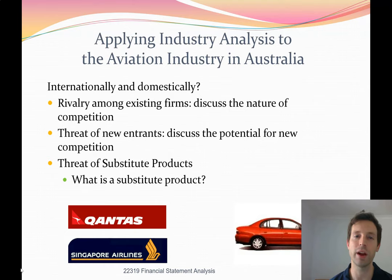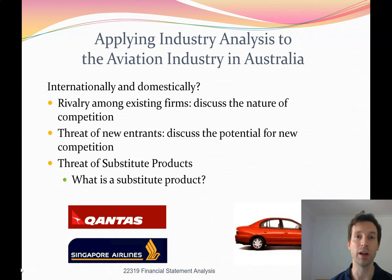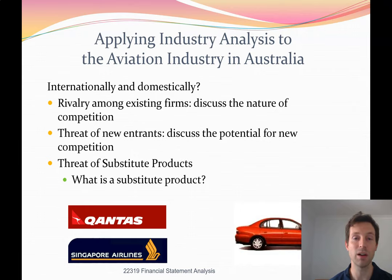Let's apply this framework to the aviation industry in Australia using the Qantas case study. The first force — rivalry among existing firms — is high in the airline industry. There are lots of different airlines flying into and out of Australia competing with Qantas, including Singapore Airlines and Air New Zealand. In the domestic market, there's also Virgin Airways. The competition is fierce with many different suppliers of flights, making rivalry very difficult in the airline industry.